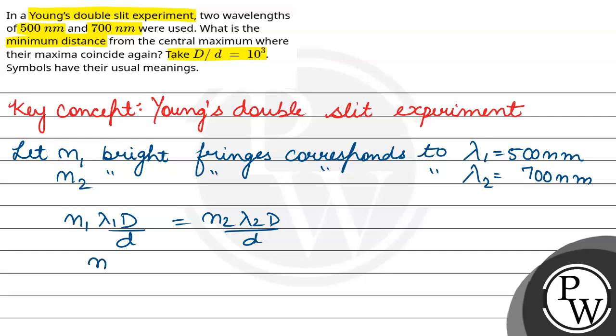So, this will be N1 lambda 1 equals to N2 lambda 2. And N1 by N2 value put. So, this will be 7 by 5.